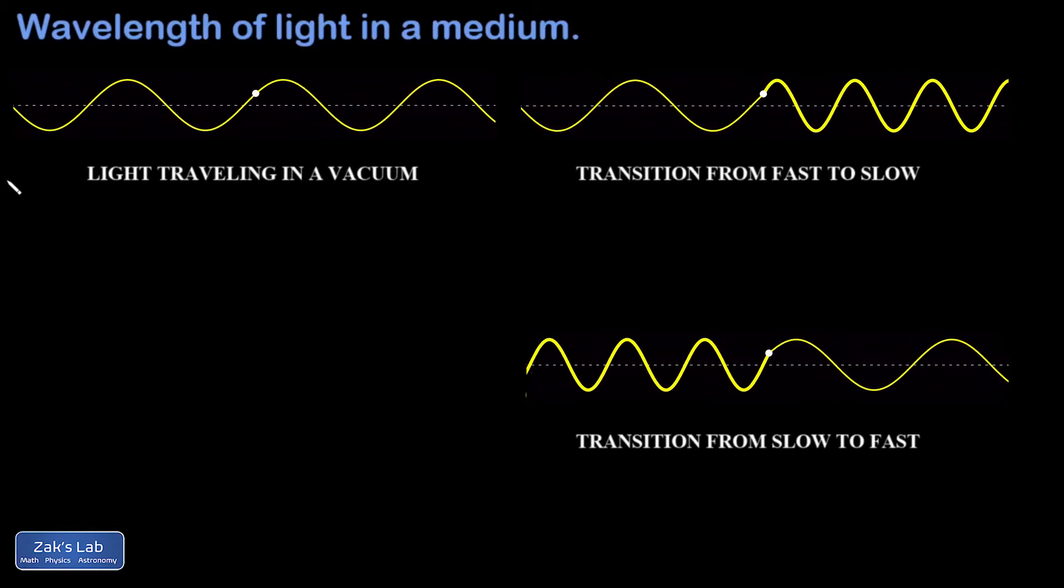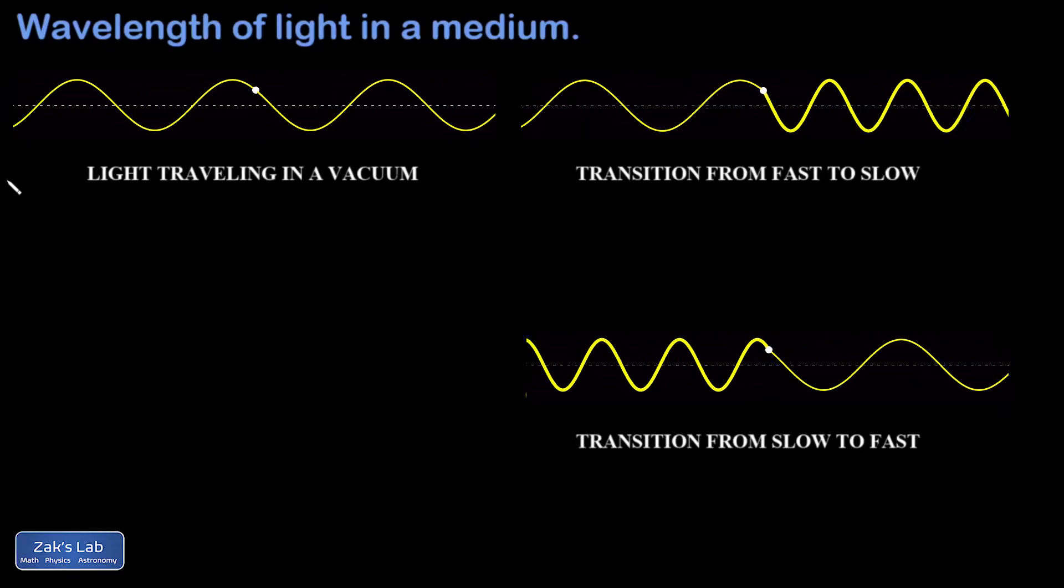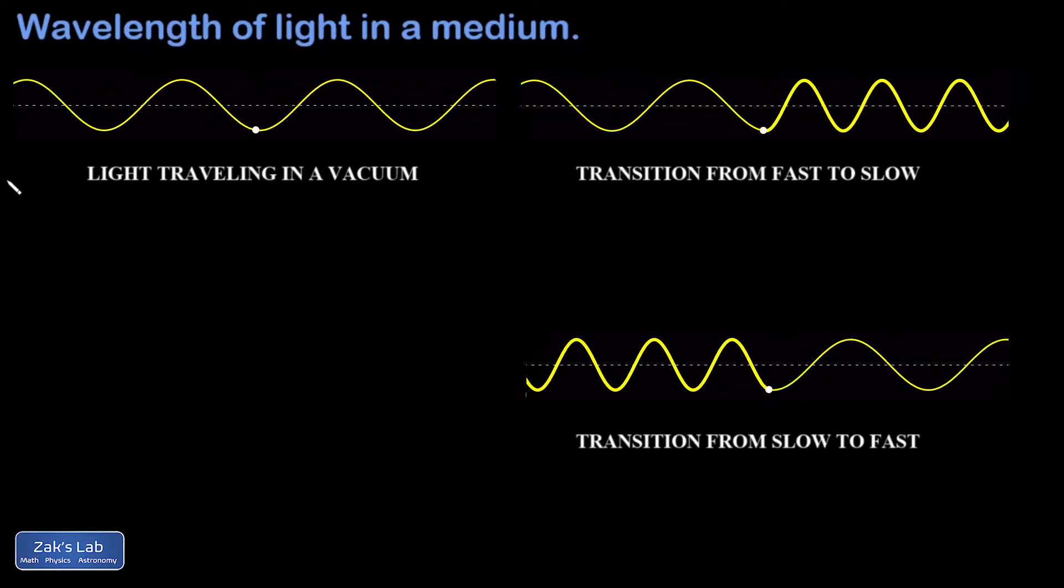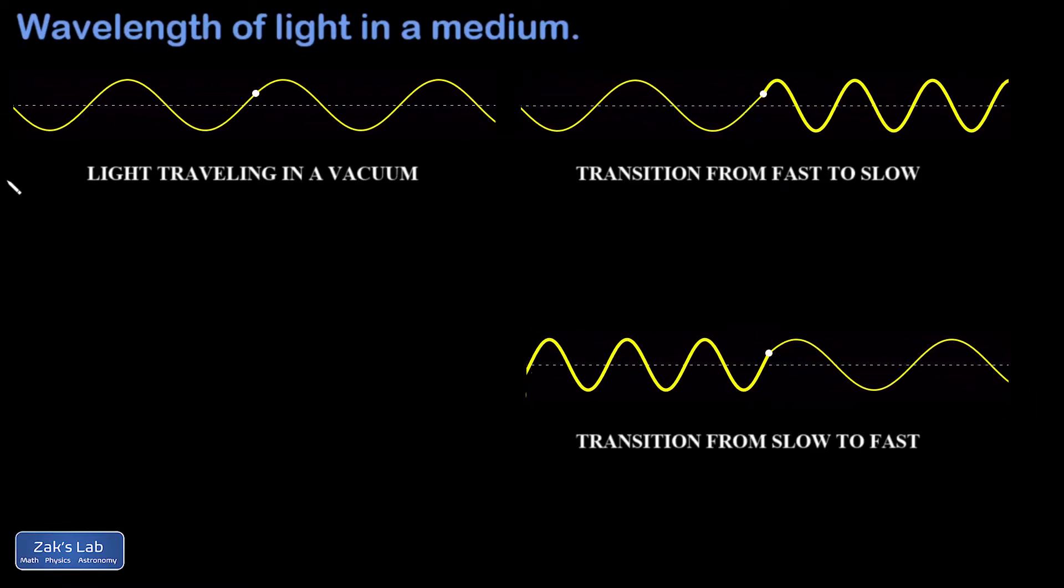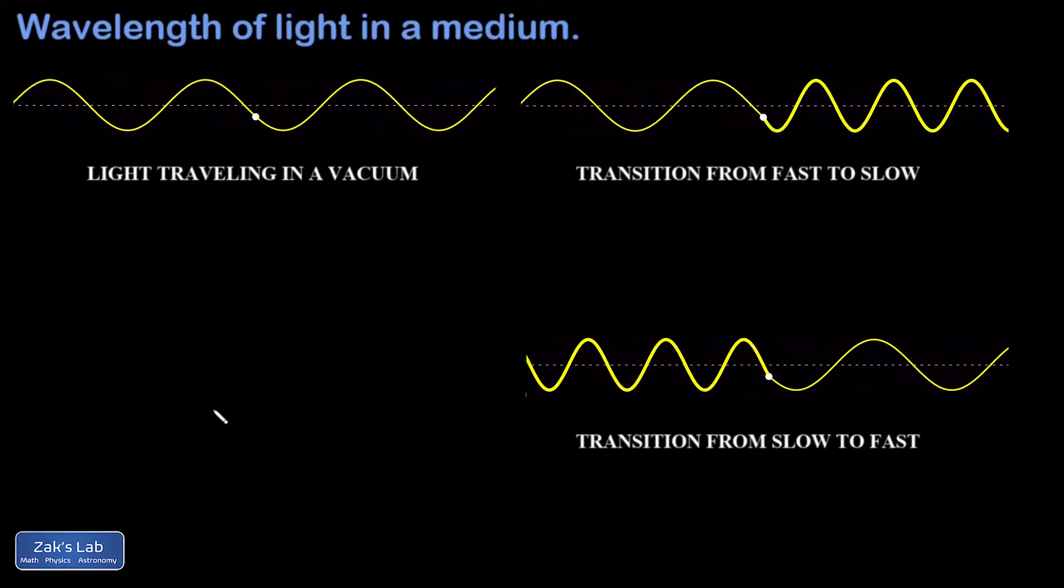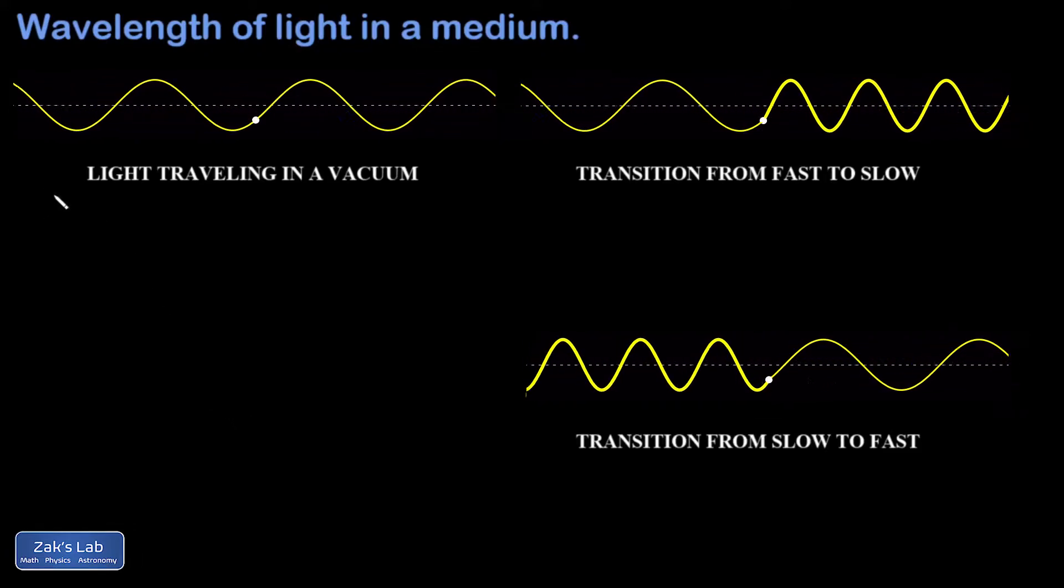To start things out, we visualize light waves in a vacuum as transverse waves on a string. Light traveling in the direction of a light ray can be visualized as a simple wave train, like we see in the first animation on the upper left.